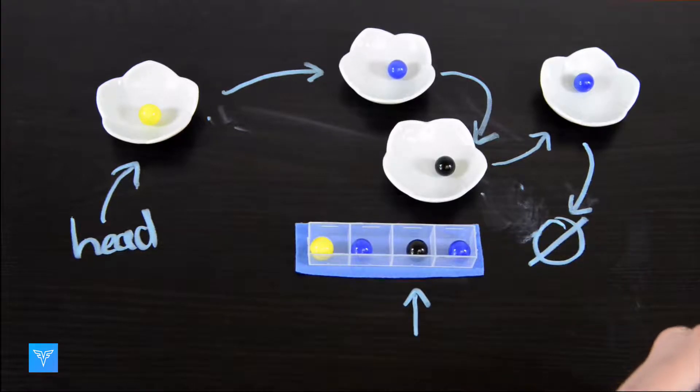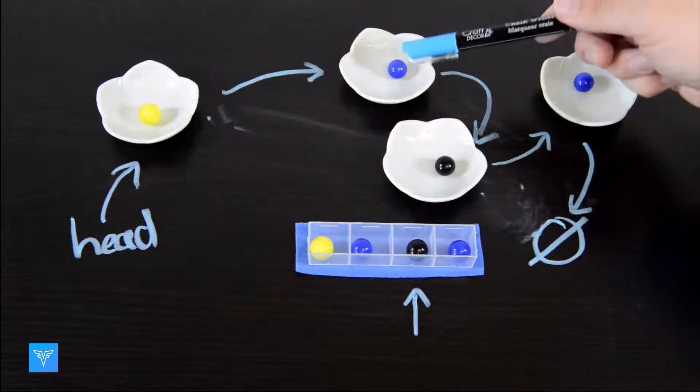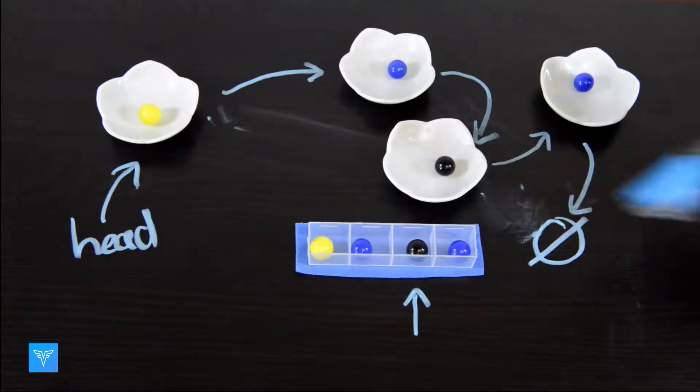If we wanted to find the third element in our linked list, we would have to start at the head and count 1, 2, 3 to show this black element is the third element.